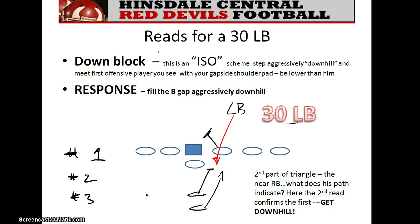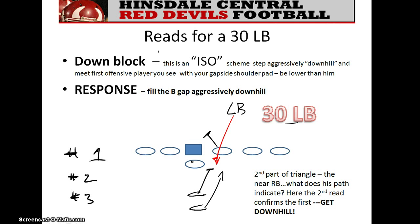Looking at this particular diagram, you can see this is the down block from the guard. You're this linebacker — this is a down block, he's moving towards the football. If this is your first read, that indicates a downhill movement by you. The second read is this guy right here coming towards you, which confirms it. Your first and second reads confirm that you should be blowing up the gap and coming downhill. The correct response is filling the B gap aggressively because both reads tell you to fill it.